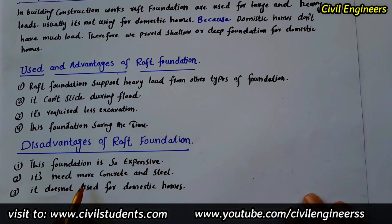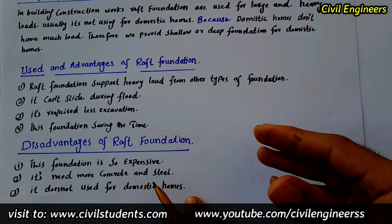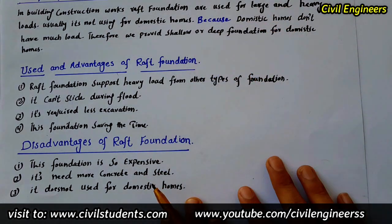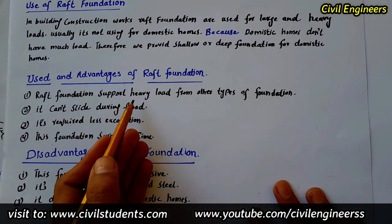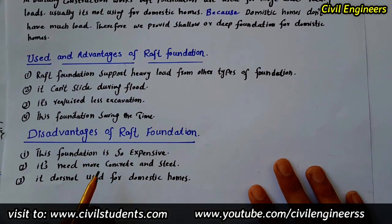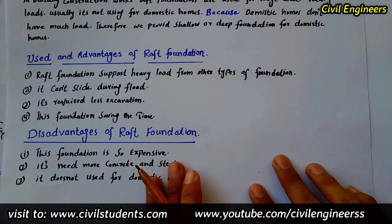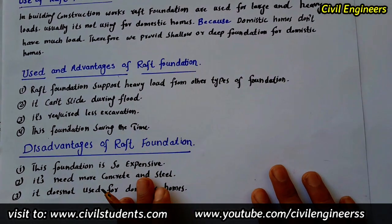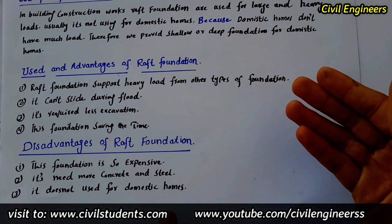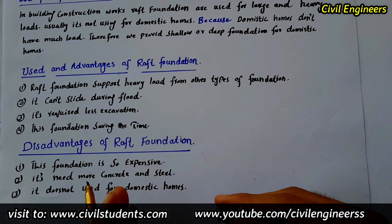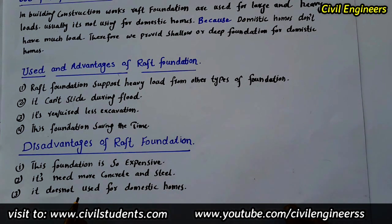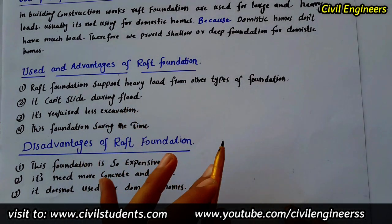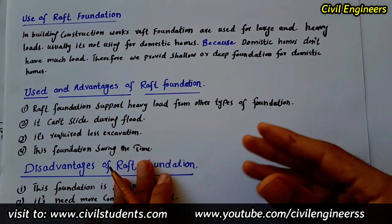The second disadvantage: it needs more concrete and steel. We have to provide more concrete and steel for raft foundation because it supports heavy loads. The last disadvantage: it is not used for domestic homes. For domestic homes, we can use shallow or deep foundation since they need less material and cost, whereas raft foundation requires more.